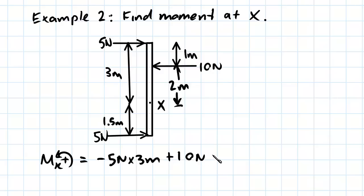So plus ten newtons times its lever arm, which is two meters. And finally this bottom force is five newtons, and it pushes from left to right. But since X is above it this time, this will cause a rotation in the anti-clockwise direction.